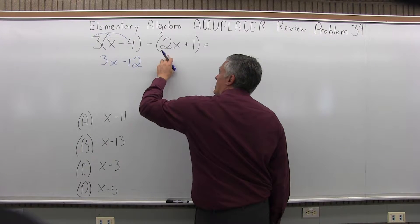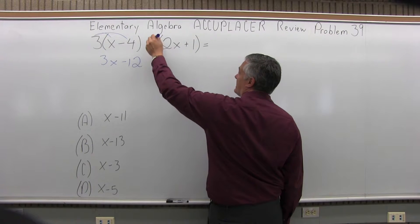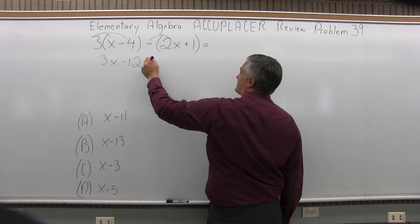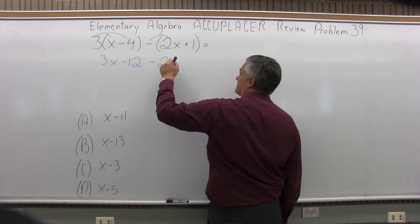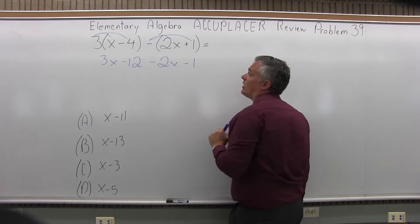Now the next set of parentheses, that minus in front of the parentheses applies to everything in the parentheses. So this minus applied to the 2x is going to make a minus 2x and the minus in front of the parentheses applied to the 1 is going to make a minus 1.